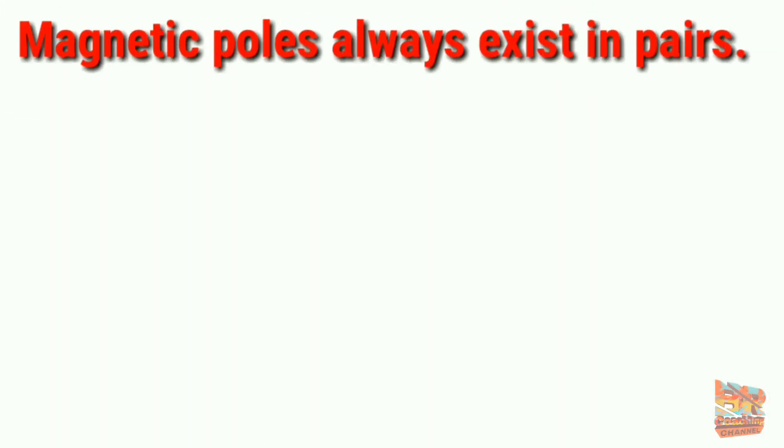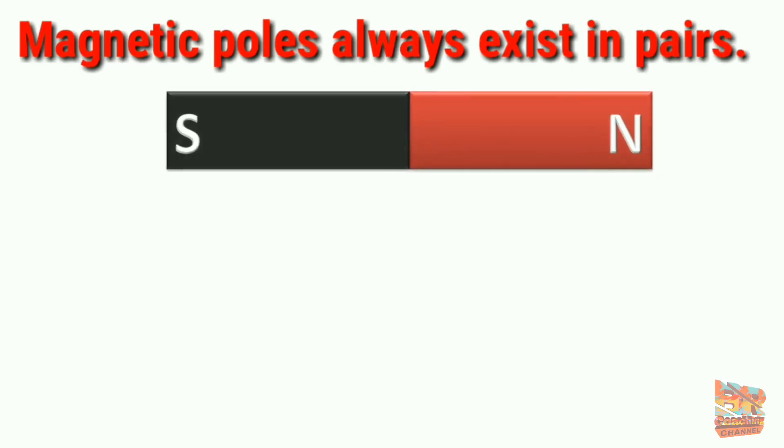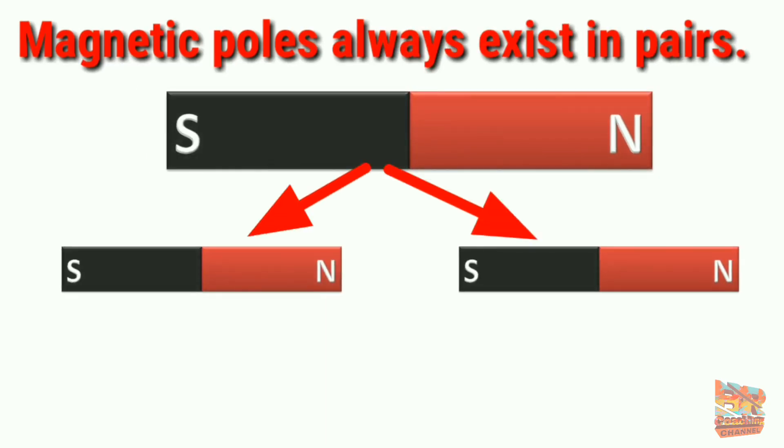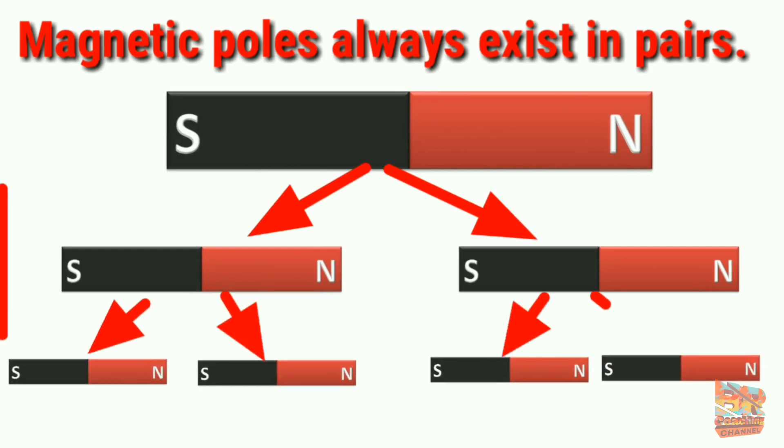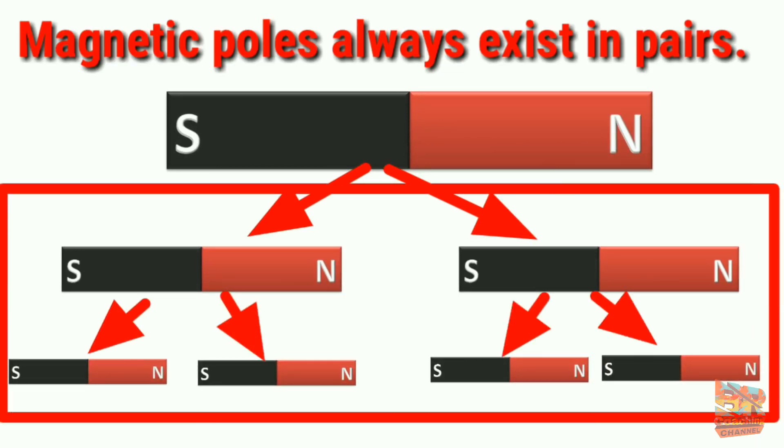One more property of magnets: Magnetic poles always exist in pairs. For example, when a magnet is broken into two or more pieces, each small part of a magnet is a complete magnet in itself.